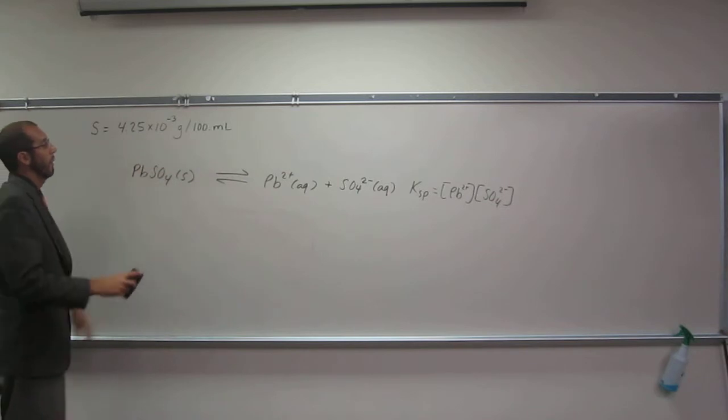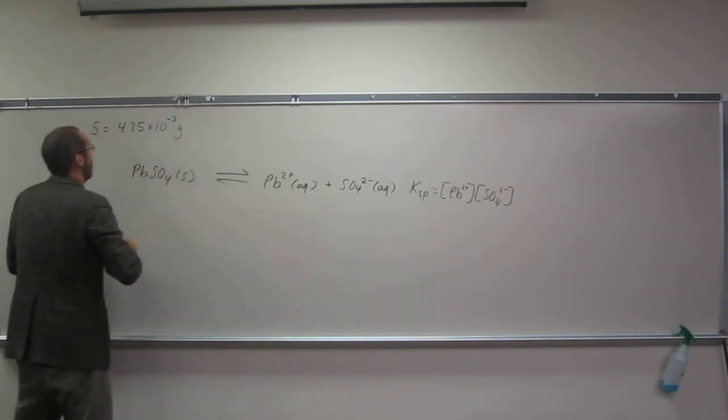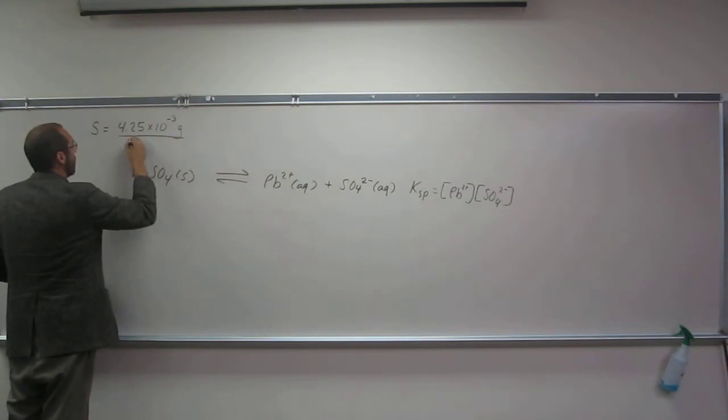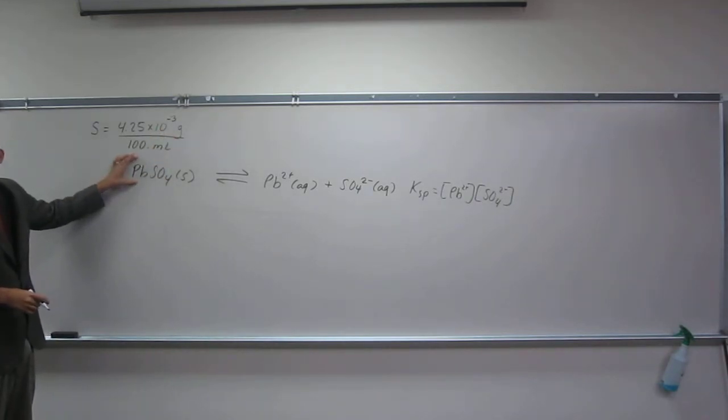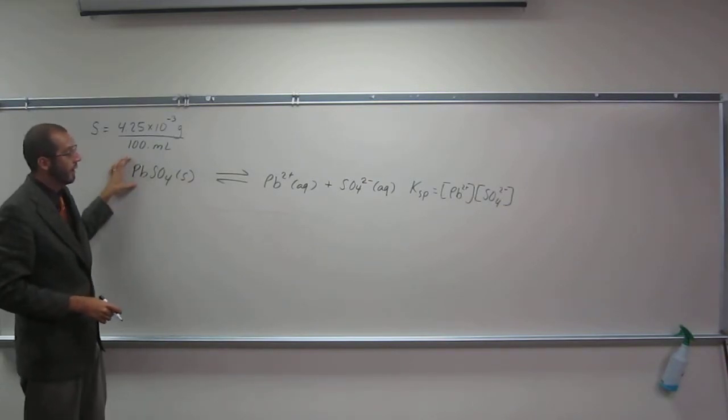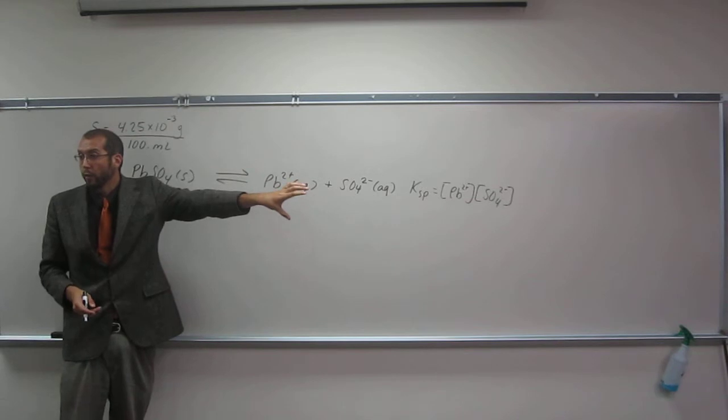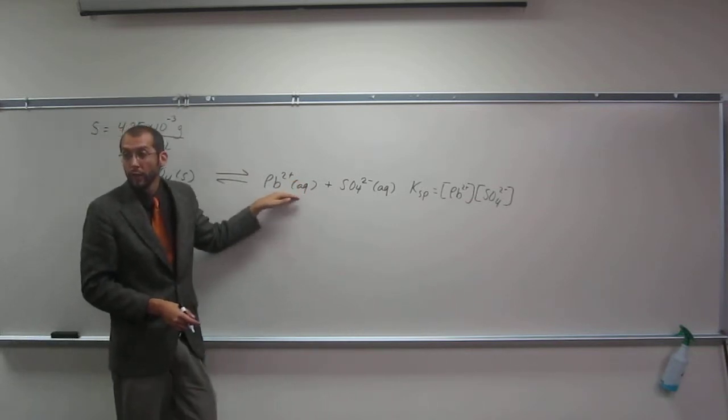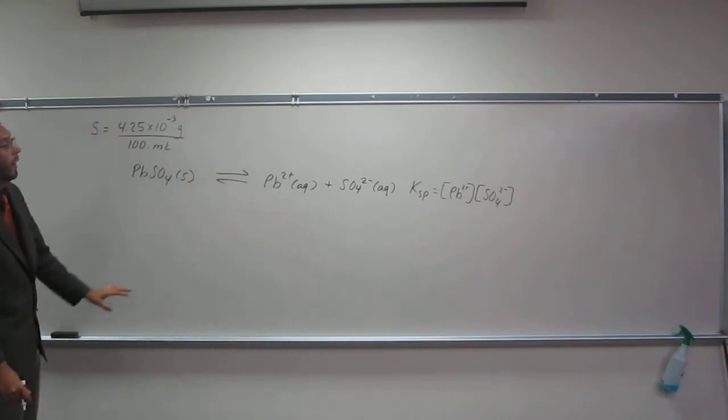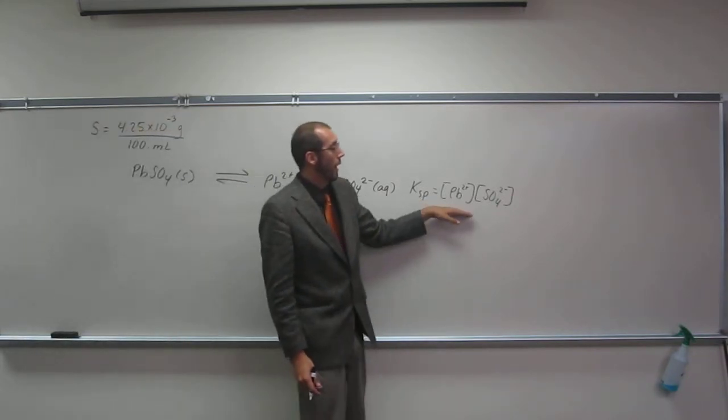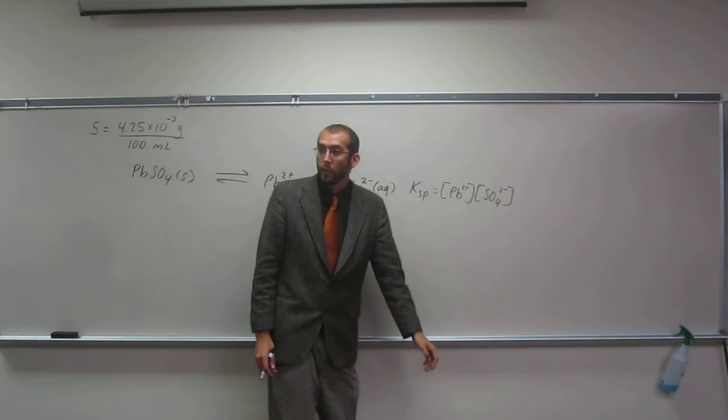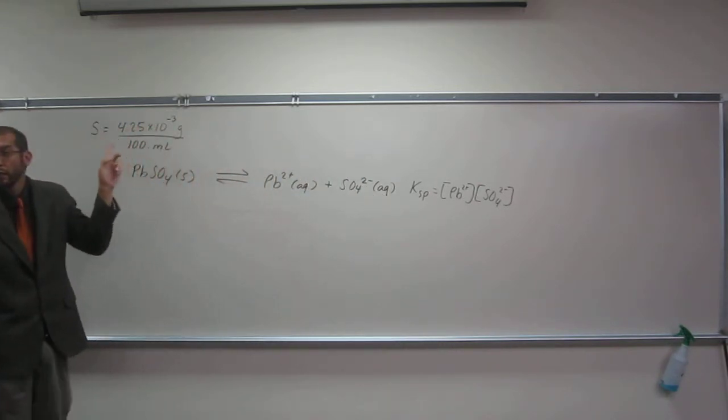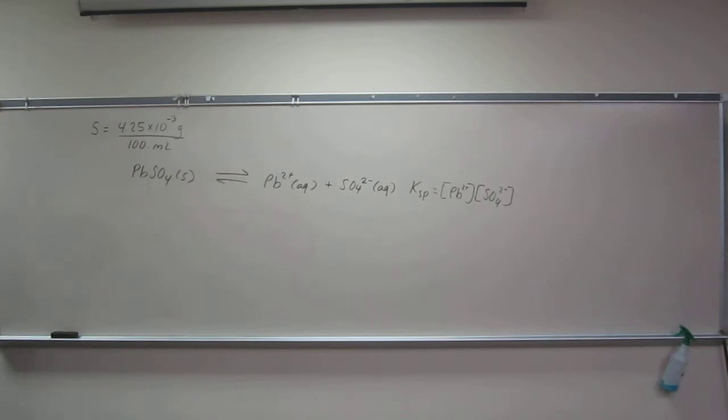The solubility is given in grams per 100 mL. If that's the solubility and we have a 1-to-1-to-1 ratio, then it has to be the solubility of each ion too. But we use molarity units in the Ksp equation, so this is not in molarity units. We're going to have to change those to molarity units.